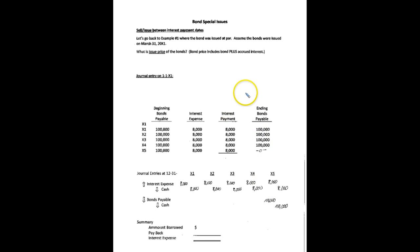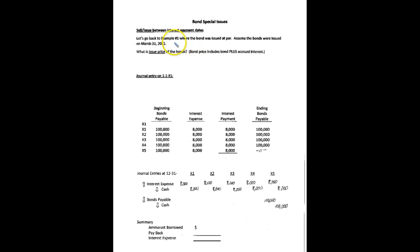In this recording, we're going to look at some special issues related to bonds. The first one we want to look at is what if the bonds aren't sold at the beginning of the year or on the contract date. Recall in example one, the bonds were issued at par, and they also were dated January 1.